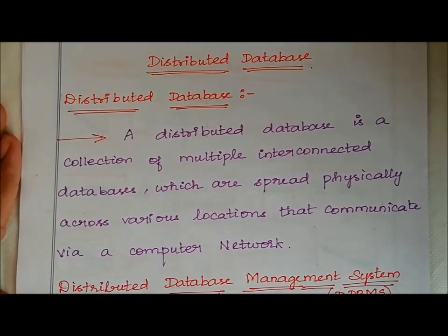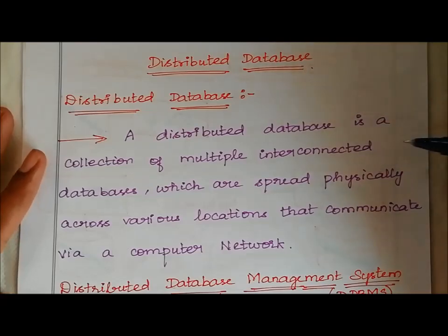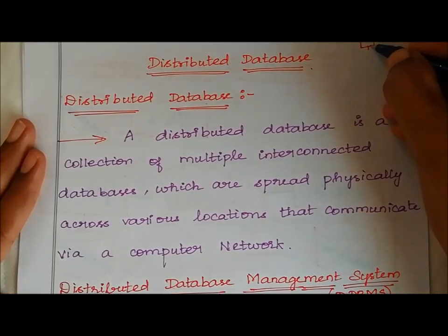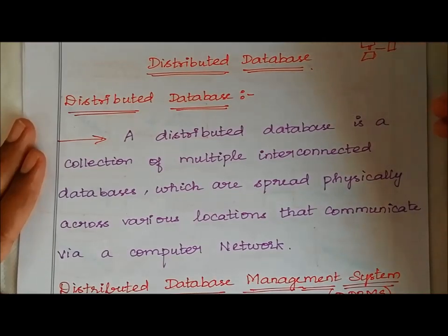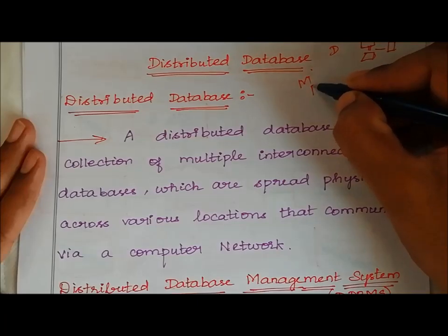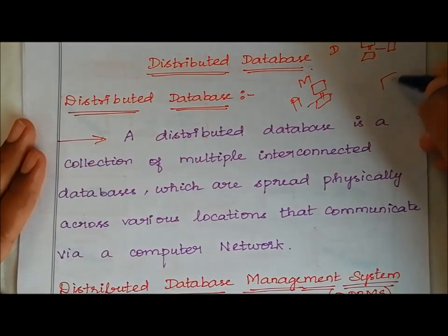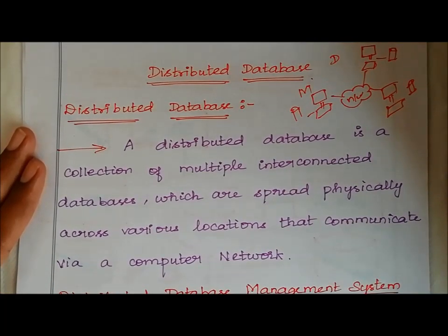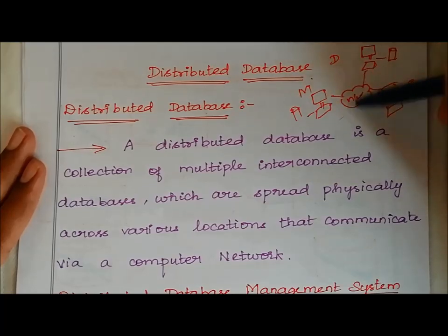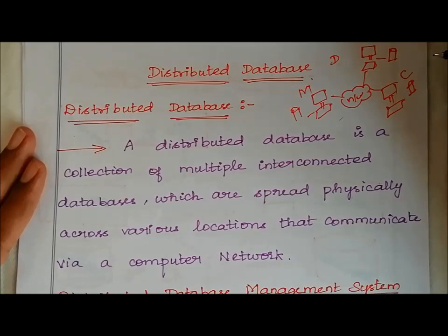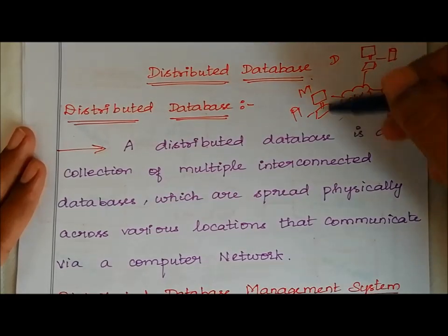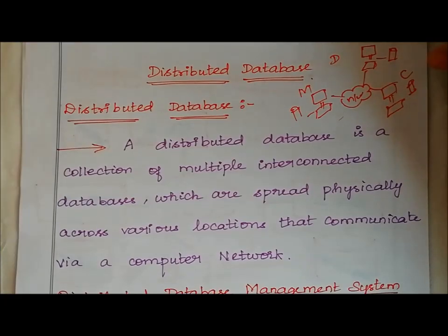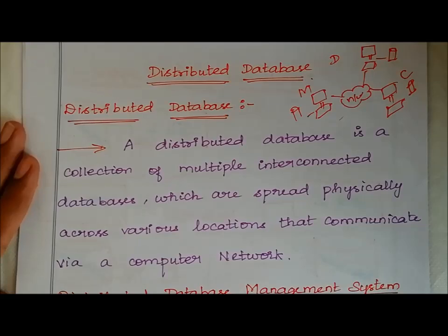For example, one database in our company in Delhi, another database in our company at another location — these are all part of our company network. This is called a distributed database, just like Amazon's website, where one database is maintained in Delhi and others are maintained at different locations, all interconnected through the network.